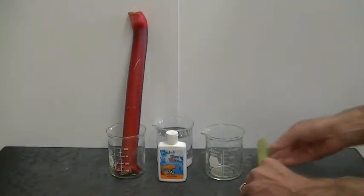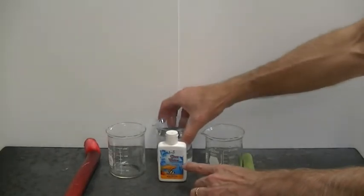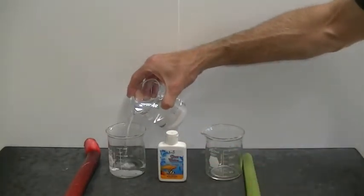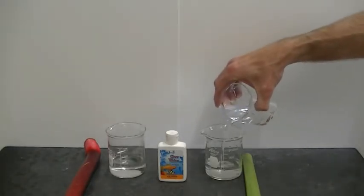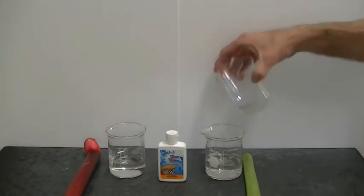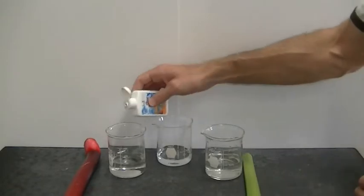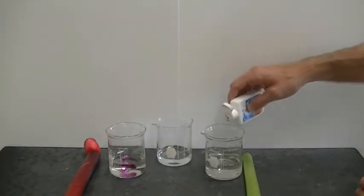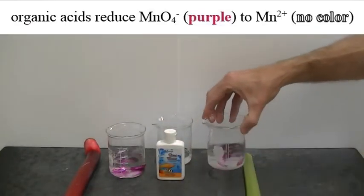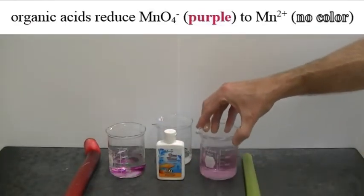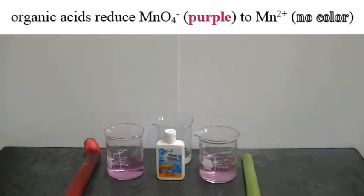We can use a solution of potassium permanganate, which is found in Jungle Brand Clear Water Aquarium Treatment to help us do this. Now the way this works is potassium permanganate, which is purple in color, will react with the organic acids. And when the organic acids react with the purple potassium permanganate, they change the color of the potassium permanganate to colorless. And that's because the potassium permanganate is reduced to the colorless manganese 2+ ion.